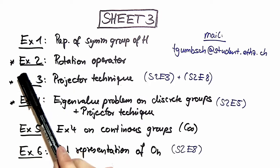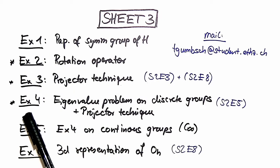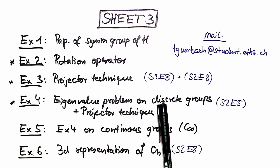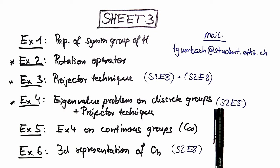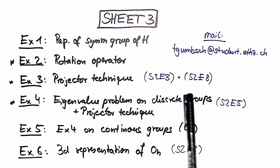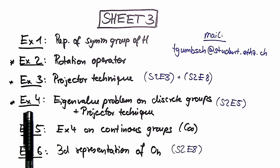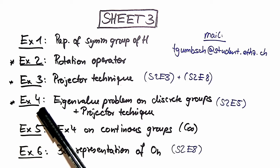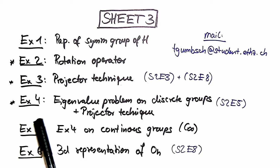These two exercises build up for the solution of exercise number 4, namely an eigenvalue problem on discrete groups. Here we use again the knowledge of exercise number 5 of problem sheet number 2. So this is really important. If you got this exercise, you can consider yourself having understood the knowledge of this topic.